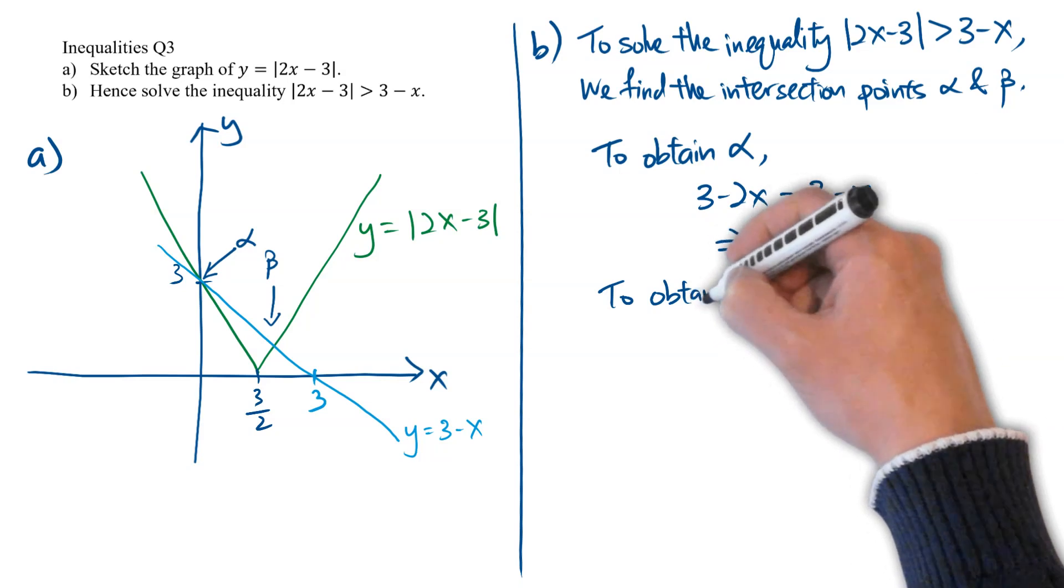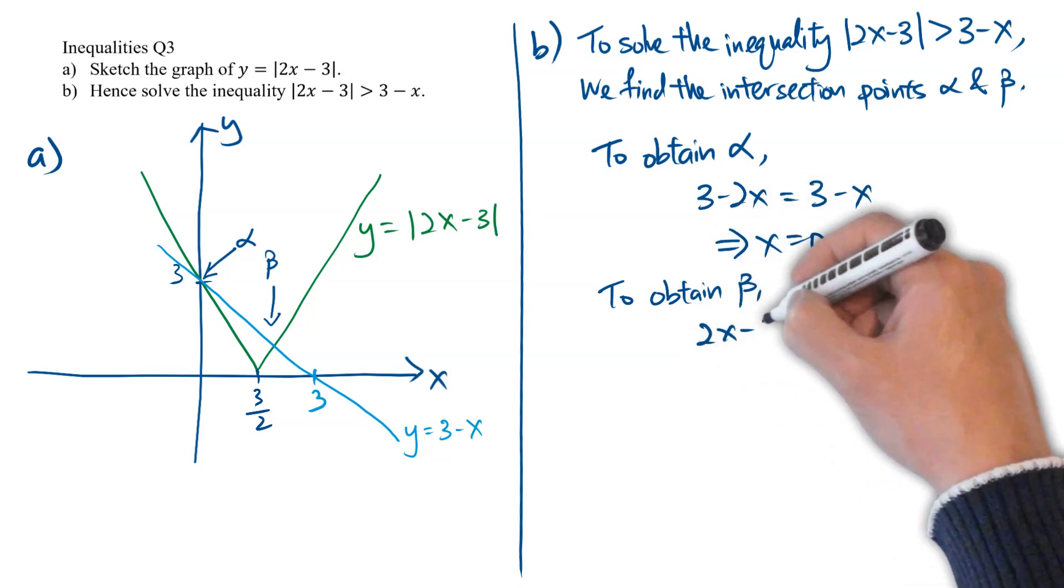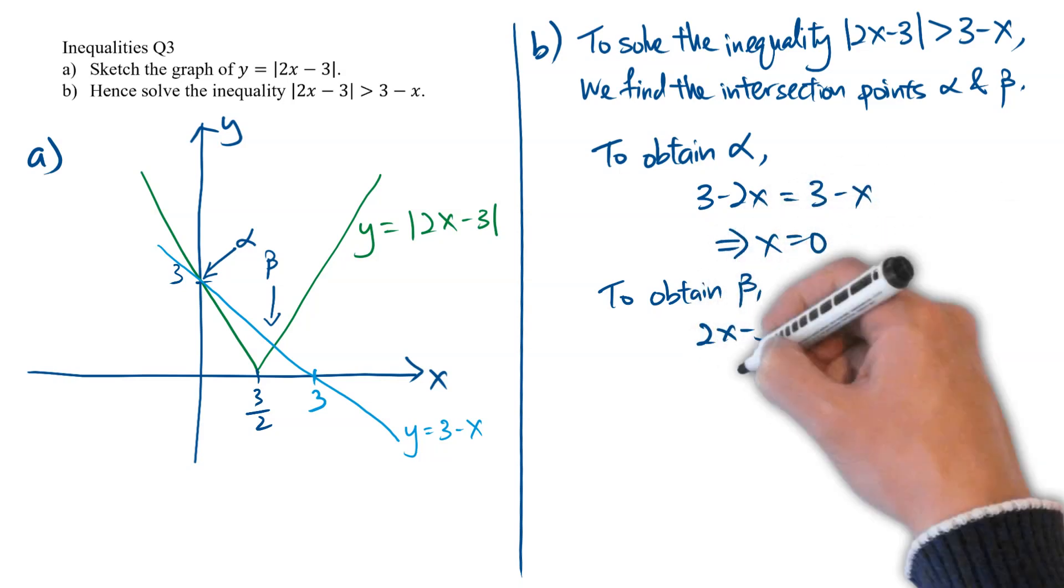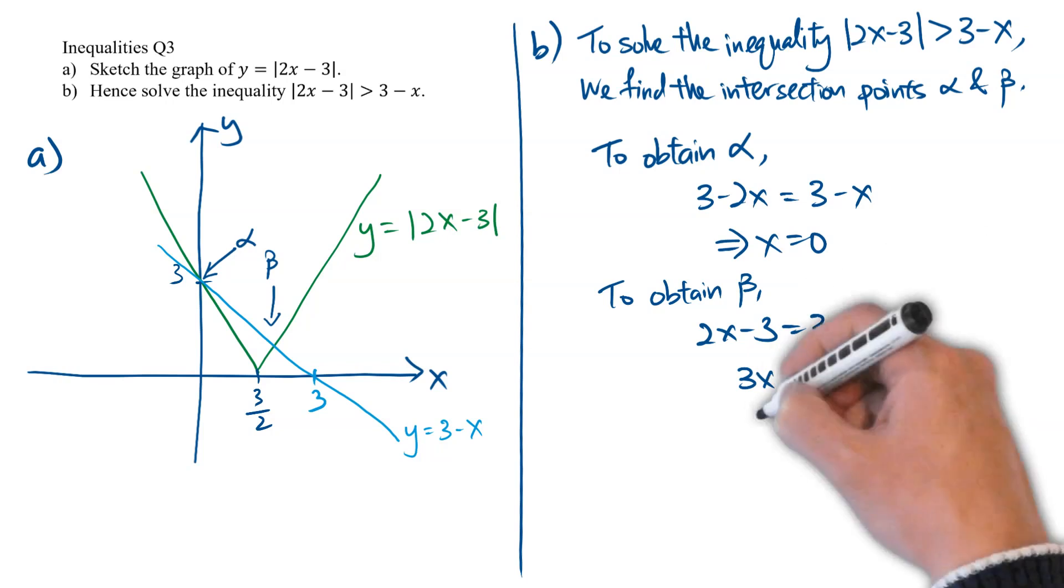Thereafter, to obtain beta, we can solve 2x minus 3 equals 3 minus x, which will eventually give us x equals 2.